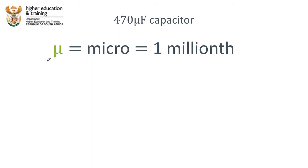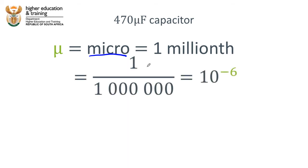Well, what is that? Well, micro, this letter here, mu, Greek letter mu, we use for micro and micro is another way of saying 1 millionth. And 1 millionth is another way of saying 1 divided by 1 million.